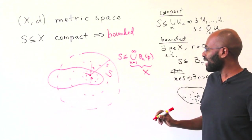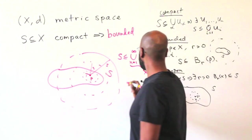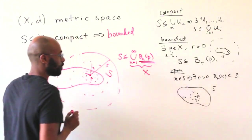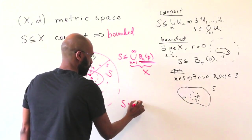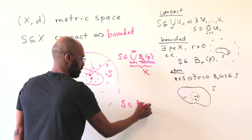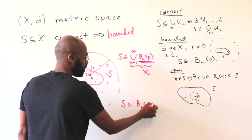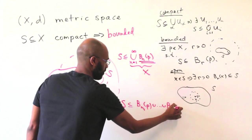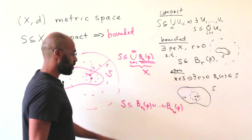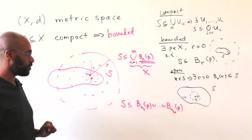So this union actually is an open cover of our set. Because our set is compact, there's a finite sub cover. So there's a finite number of these balls that cover S. We can write that as saying S is inside of the union of B_N1(P) up to B_NN(P), where these are the finite balls that form our finite sub cover.